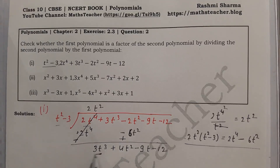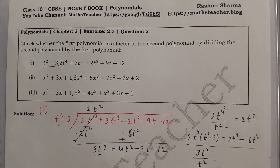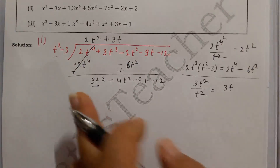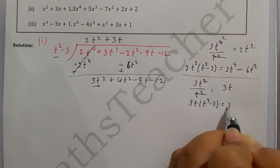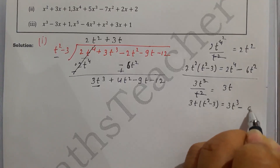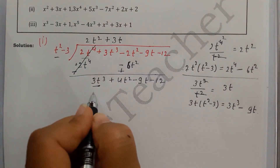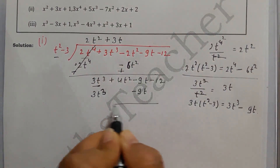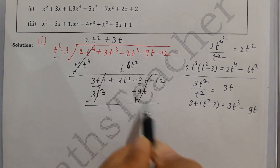Now we divide 3t³ by t²: t² cancels with t³ leaving 3t as the next quotient term. We multiply 3t by divisor t² − 3, giving 3t³ − 9t. After sign change and subtraction, the 3t³ and 9t terms cancel, leaving remainder 4t² − 12.